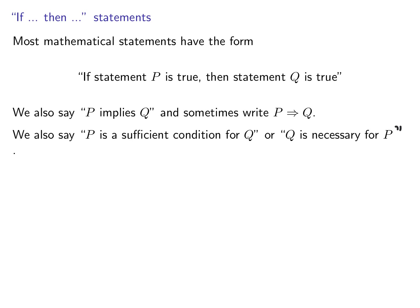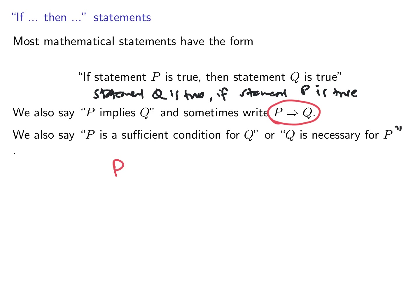You can also write it as: statement Q is true if statement P is true. There are two notions here that we need to make. In the case that P implies Q, the statement P is called an assumption or a hypothesis. When we say P implies Q, what we are saying is really: if the hypothesis is true, or the assumption is true, then the conclusion is true.